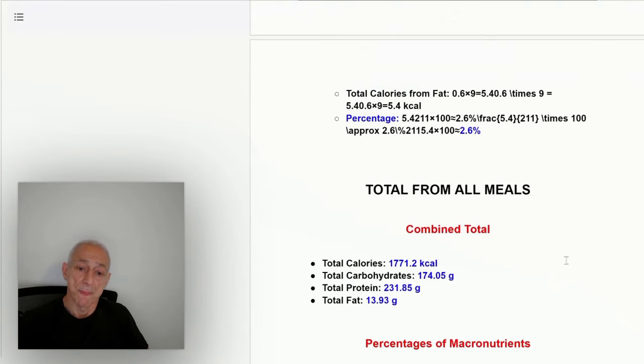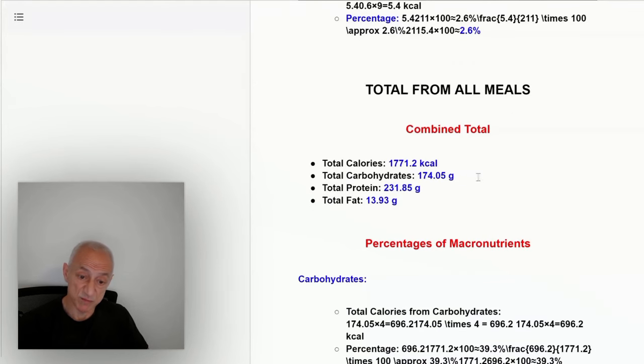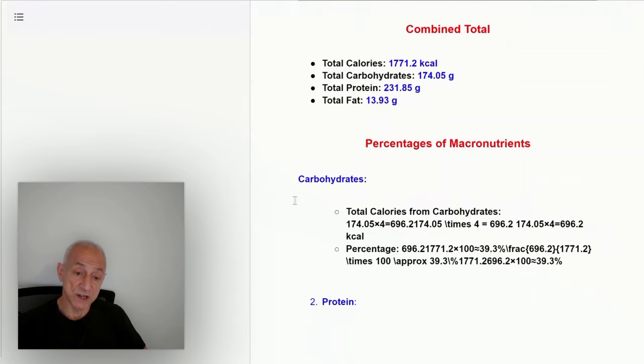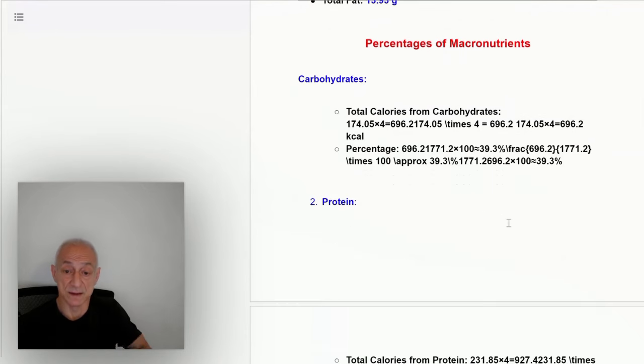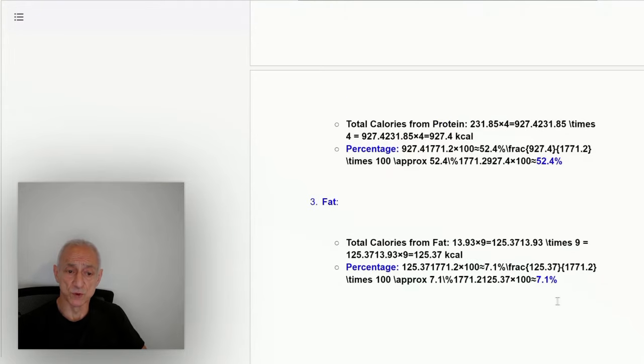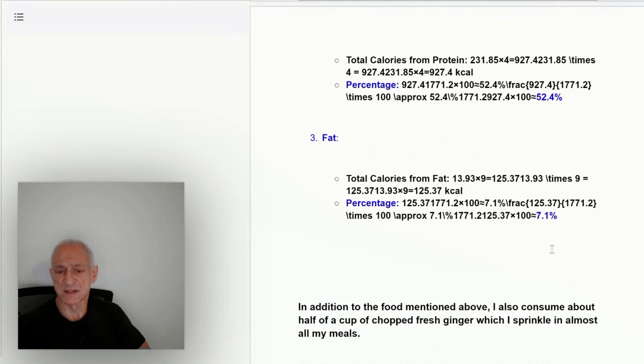Now, as you can see, the total for all my meals combined is about 1,800 calories. I'll get back to that in a minute. 174 grams of carbs, 231 grams of protein, and about 14 grams of fat. Percentage of micronutrients for my entire day: carbohydrates about 40%, protein about 52%, and fats about 7-8%, give or take a percentage point.